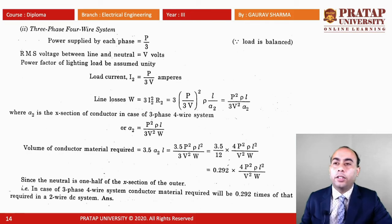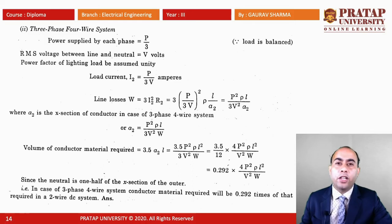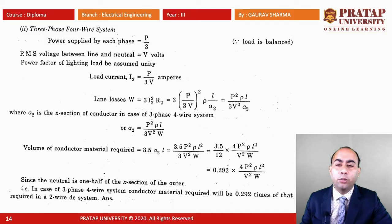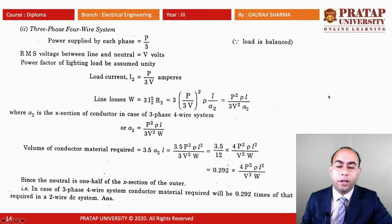For the three phase four wire system, the power supplied by each phase is P/3. The RMS voltage between line and neutral is V volts, and assuming unity power factor (cosφ = 1), the load current i2 = P/(3V) amperes. The line losses are W = 3·i2²·R2, from which we calculate a2. The volume of conductor material required is 3.5·a2·l, since the neutral wire cross section is half of the outer conductor. Substituting and comparing gives the ratio relative to the DC two wire system. Similarly, many more numerical problems can be solved.